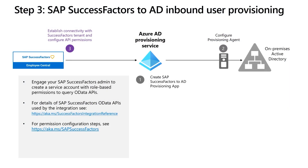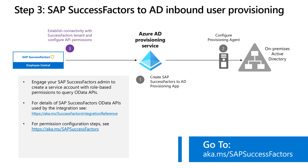And now we will register the Active Directory domains with our Azure AD tenant. We are now ready to go to step three. In this step, we will establish connectivity with the SuccessFactors tenant. The Azure AD SuccessFactors connector uses the SuccessFactors OData API to fetch worker data. Engage your SuccessFactors admin to create an account with role-based permissions to access worker data. For specific configuration steps, refer to AKA.ms/SuccessFactors.